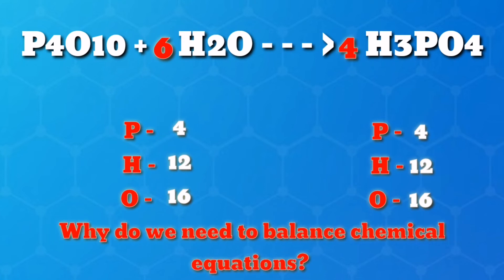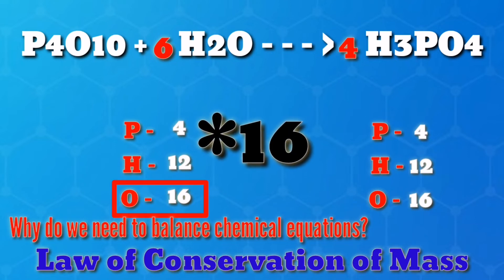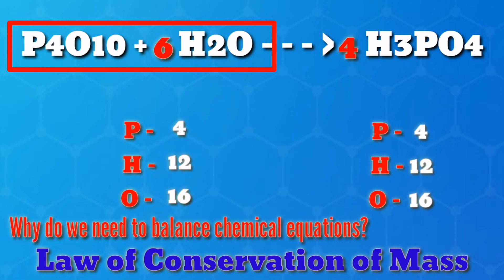Why do we need to balance a chemical equation? Chemical reactions must be balanced to satisfy the universal law of the conservation of mass, which states that matter can neither be created nor destroyed in a closed system. So, if we start with 10 atoms of oxygen before a reaction, we need to end up with 10 atoms of oxygen after a reaction. This means that a chemical reaction is just a rearrangement of atoms — it can neither create nor destroy atoms during the course of a chemical reaction.